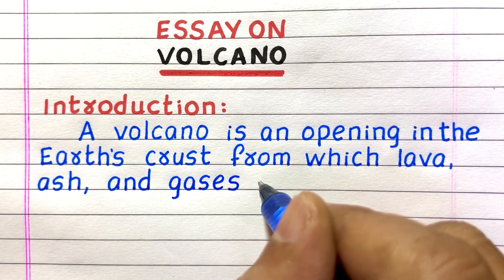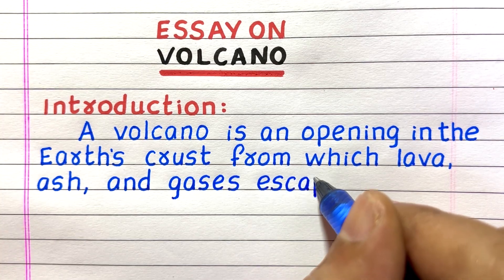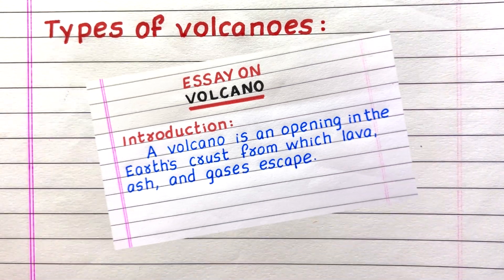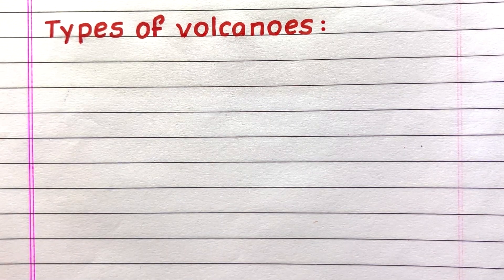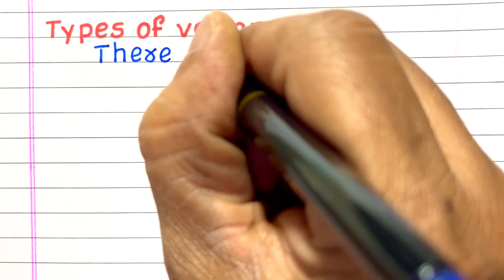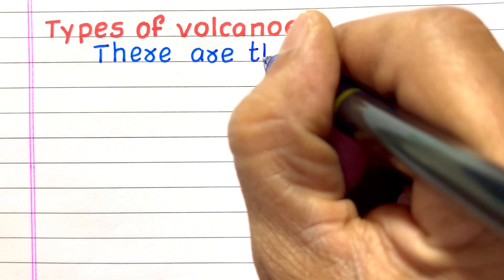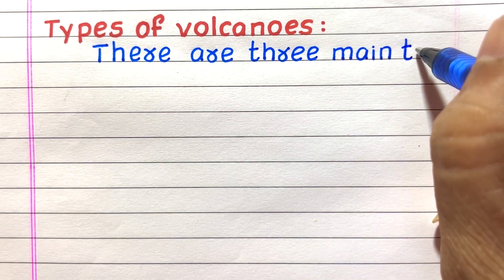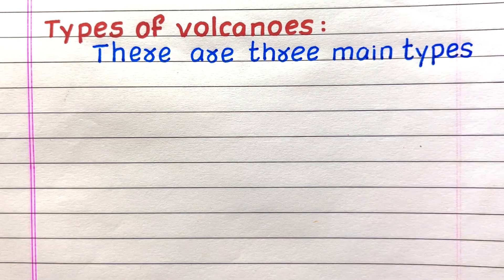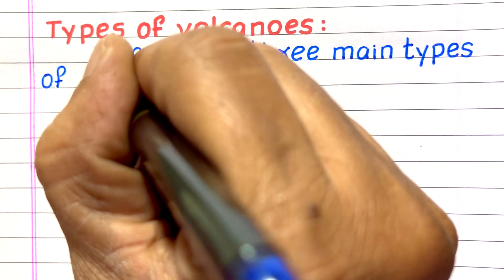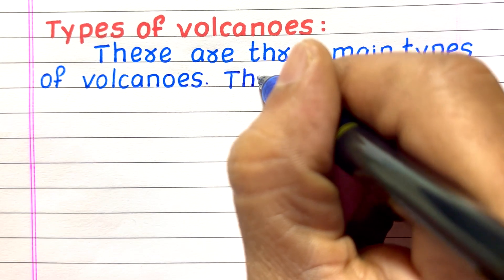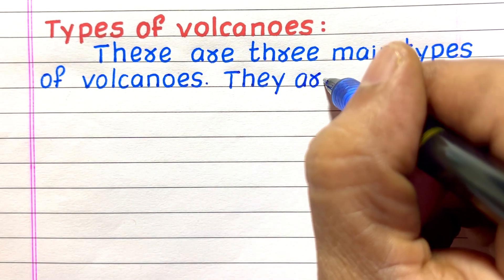Introduction: A volcano is an opening in the earth's crust from which lava, ash and gases escape. Types of Volcanoes: There are three main types of volcanoes.